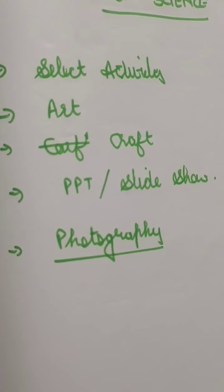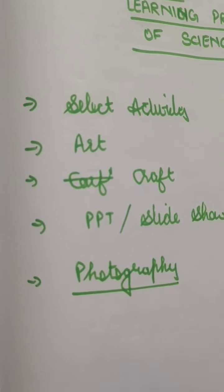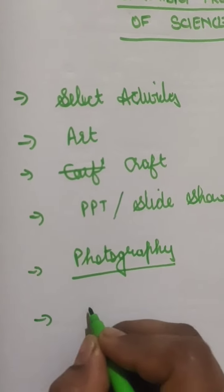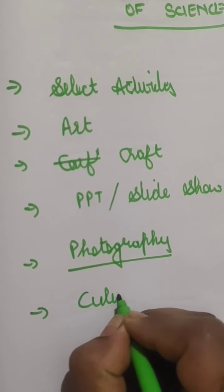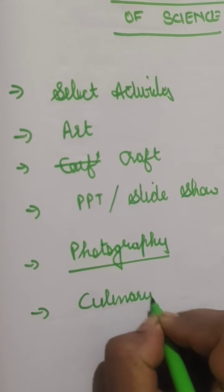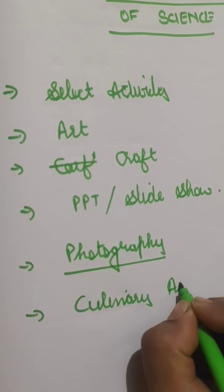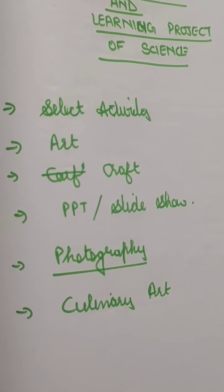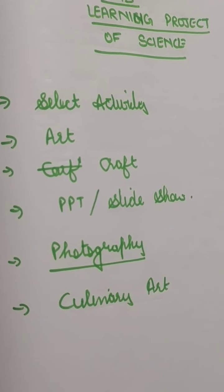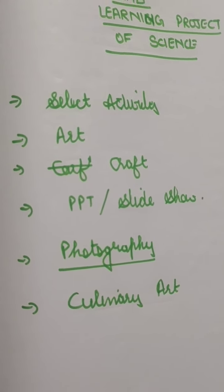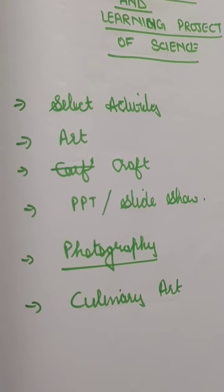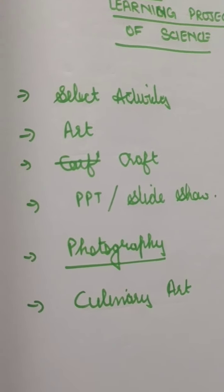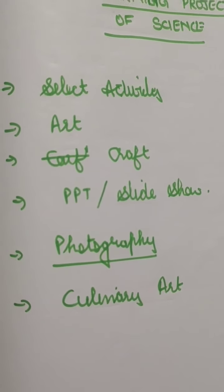Then also you can make culinary art, you can cook something. There are many options. Because as explained, it's an art integrated project, so it has to be something about art. You can make some craft, you can make some model like you can make a heart from your creativeness. You can make anything, you can choreograph something, you can make some documents, you can make some presentation.